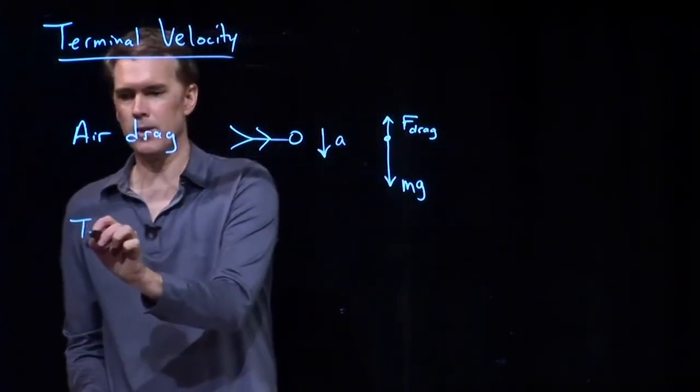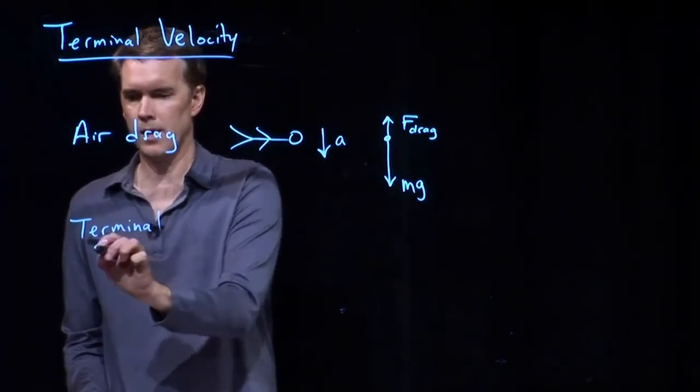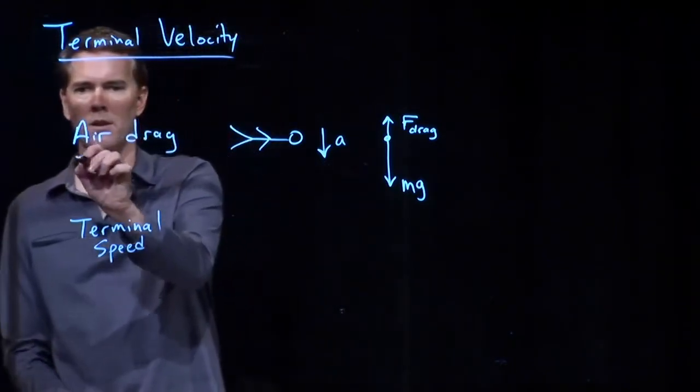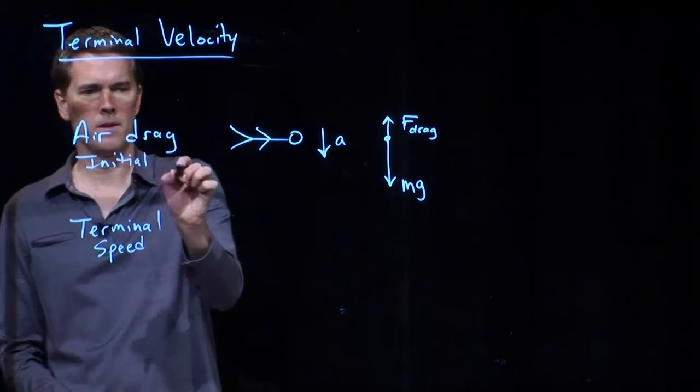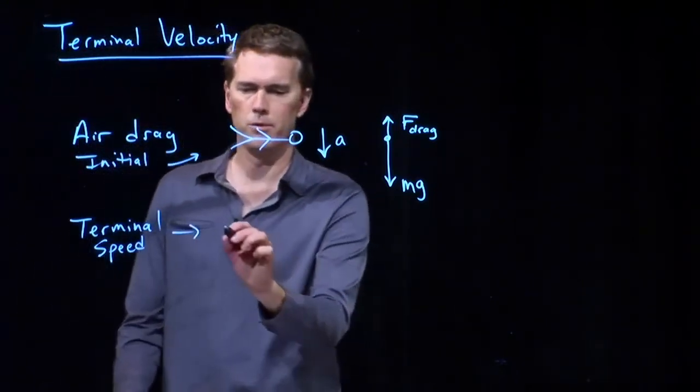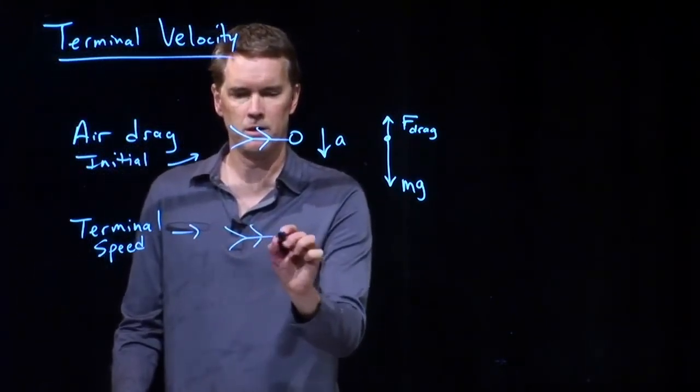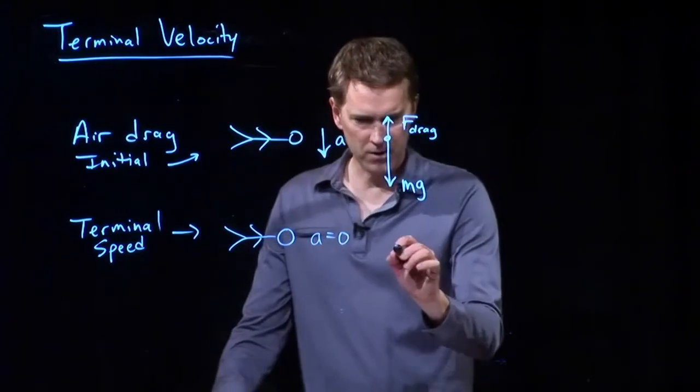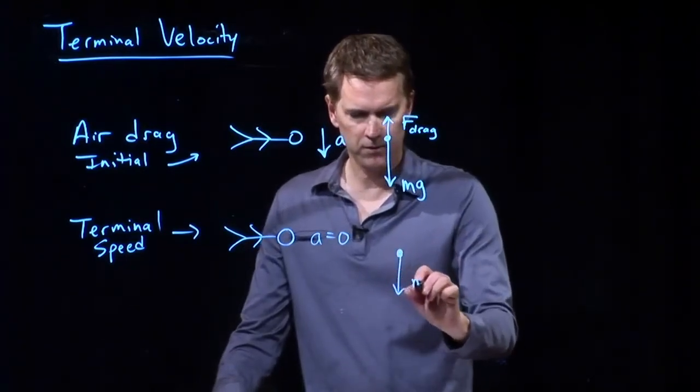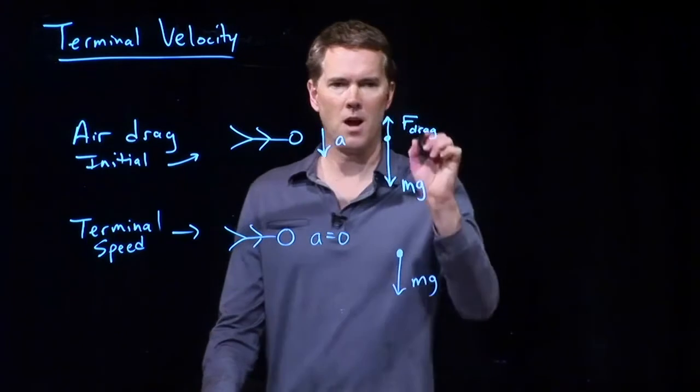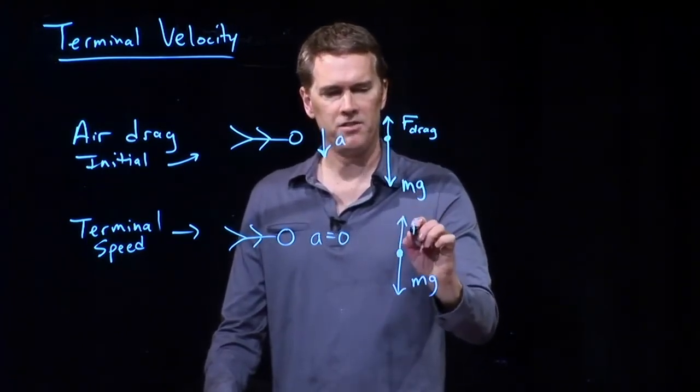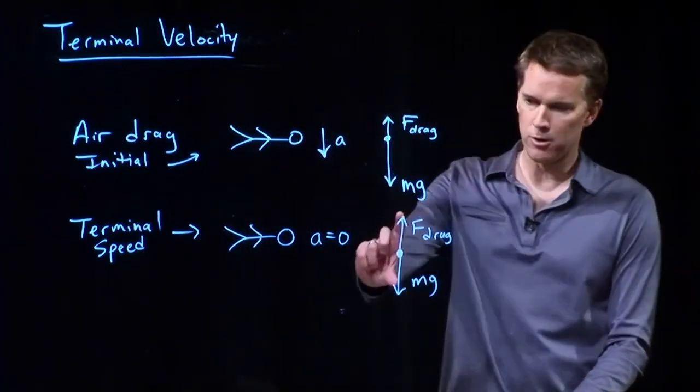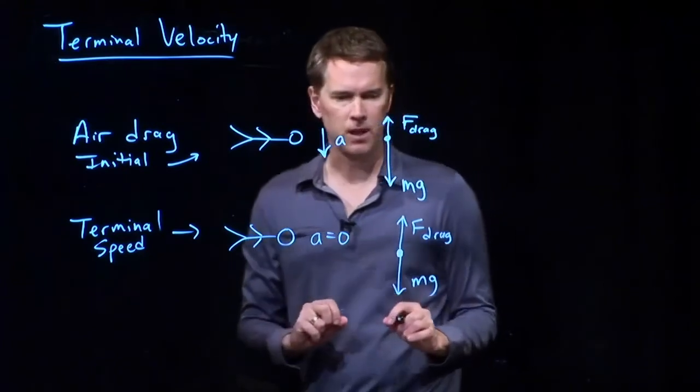But later, when I reach terminal speed, we know that I'm no longer accelerating. So, this is sort of initial picture right there. And now we're going to do when we've reached terminal speed. So, here we are falling. We know that at terminal speed, acceleration is zero. So, when I draw the forces, I should draw F drag, the same length as mg, but pointing up. And now those exactly cancel out, and we get zero acceleration.